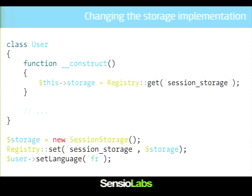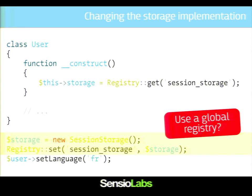Smart people think: instead of using dependency injection, you can use a global registry. This is a design pattern, so it must be cool to use. Actually, this is a very bad idea. Here I have a registry, and I'm setting the storage inside one key in the registry, which means that in the constructor I can get it from the registry. It's exactly the same as dependency injection in the sense that you can configure things, you can change the session storage class name. But we are just adding yet another layer of abstraction, adding complexity for no benefits.